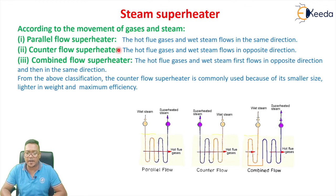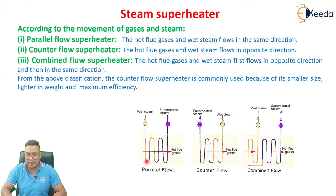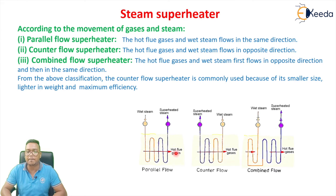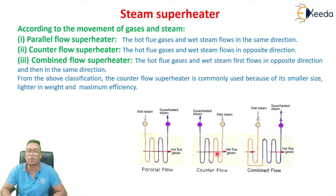According to the movement of gas and steam, superheaters are classified as: parallel flow — where wet steam and hot flue gas both flow in the same direction; counter flow — where flue gas flows in one direction and steam flows in the opposite direction; and combined type — where both parallel and counter flow arrangements are present.